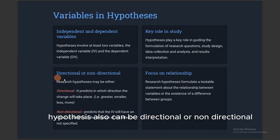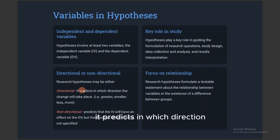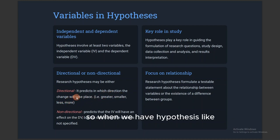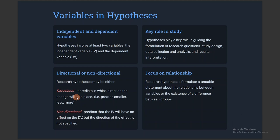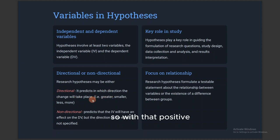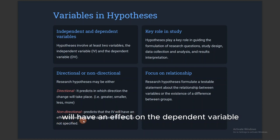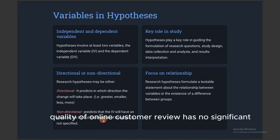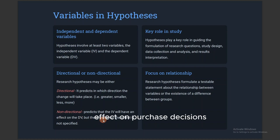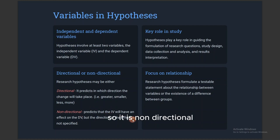A hypothesis can also be directional or non-directional. A directional hypothesis predicts the direction the change will take place — either greater, smaller, or less. For example, 'quality of online review has no significant positive effect' is directional because of the word 'positive.' For a non-directional hypothesis, it predicts that the independent variable will have an effect on the dependent variable, but the direction is not specified. For example, 'quality of online customer review has no significant effect on purchase decisions of computer brands in Nigeria' — this does not state whether the effect is positive or negative, so it is non-directional.